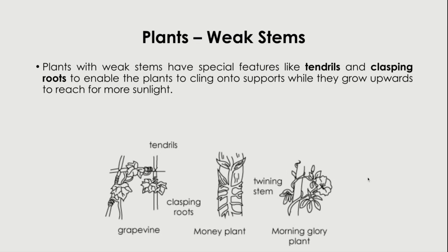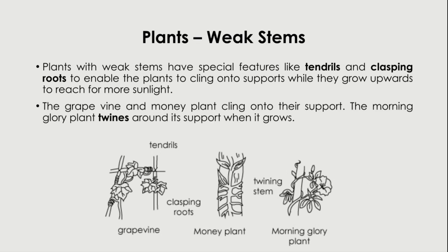Examples include grapevine and money plant, which cling onto their support, and the morning glory, which twines around its support as it grows.